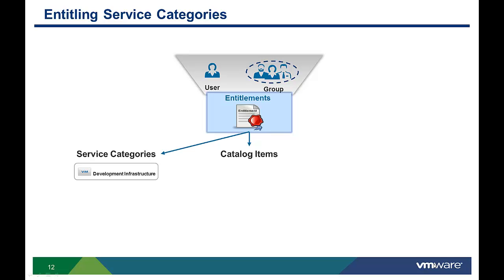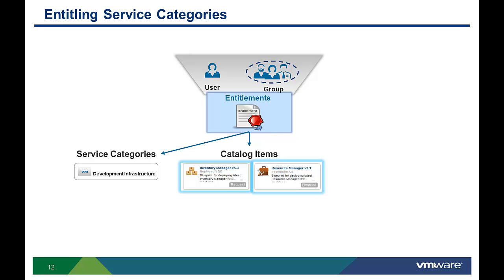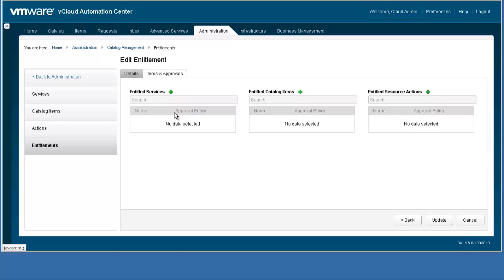Next, we will look at entitling catalog items. If the admin entitles an individual user or group of users to a specific catalog item, then the user only sees that item in the service category in their catalog. Other catalog items in the service category need to be entitled one at a time. In this example, instead of entitling the entire service category, we are going to entitle specific catalog items within a category. To start this process, click the green plus sign next to the entitled catalog items.